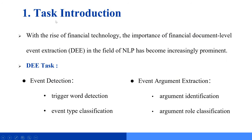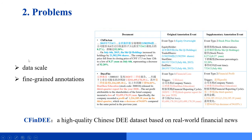The document-level event extraction task mainly includes two parts: event detection and argument extraction. However, existing datasets are limited in terms of scale and the granularity of annotations.